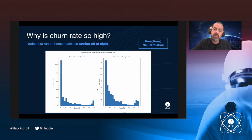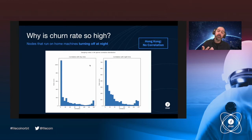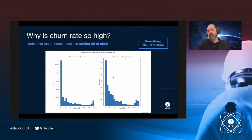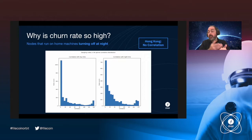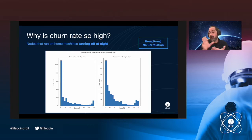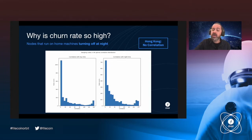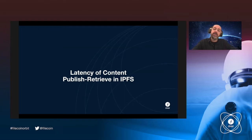Without going into too much detail about how we define the correlation — on the left, the graph shows the points in time when nodes go offline during daytime; on the right, nodes going offline during nighttime. These two look pretty similar, and based on our correlation analysis we conclude that peers do not systematically go offline during nighttime. This was for a specific location — nodes based in Hong Kong — where we must account for the local time zone.